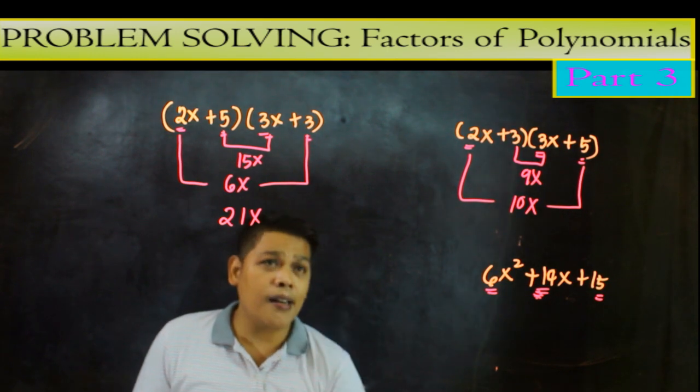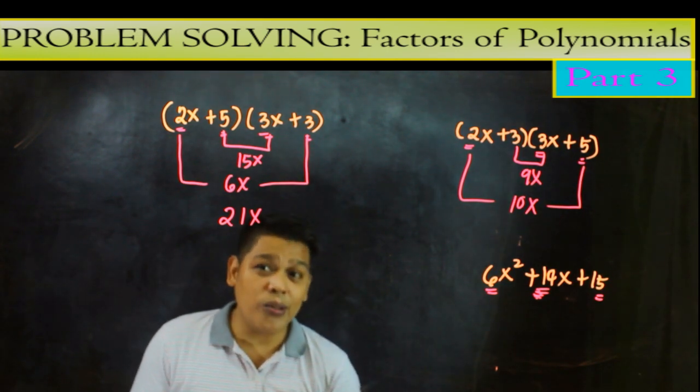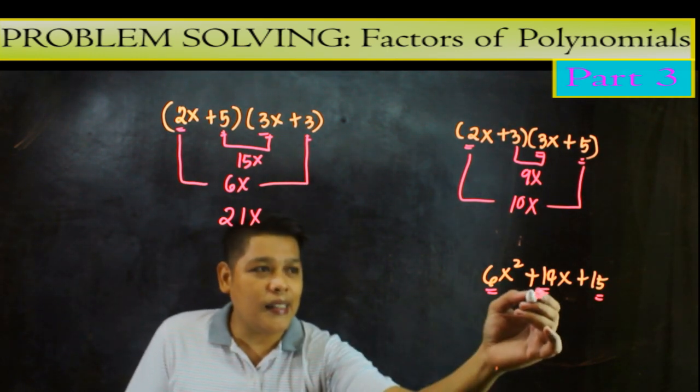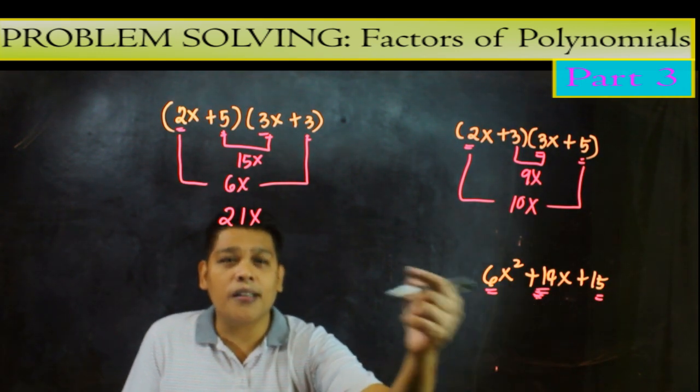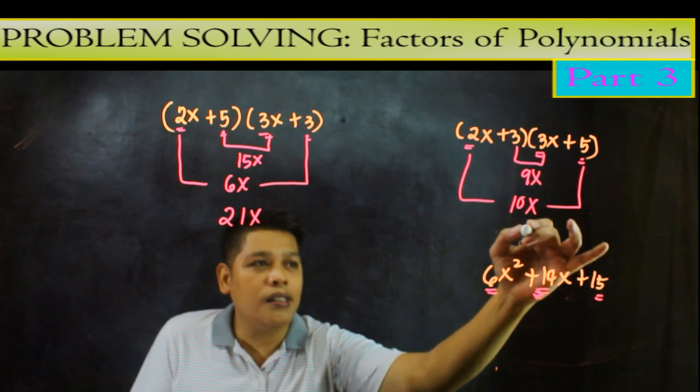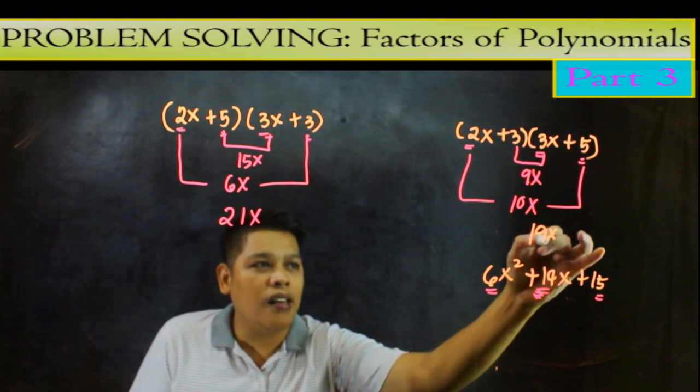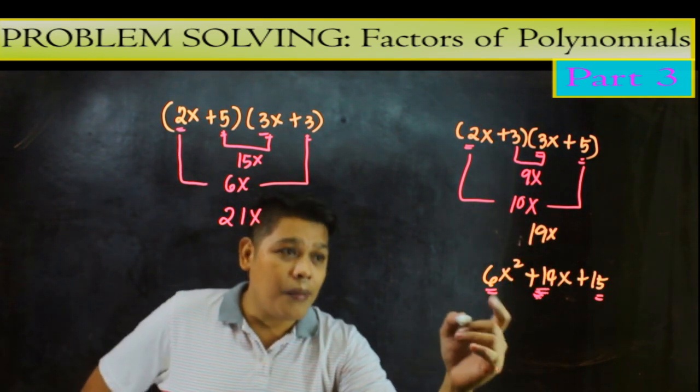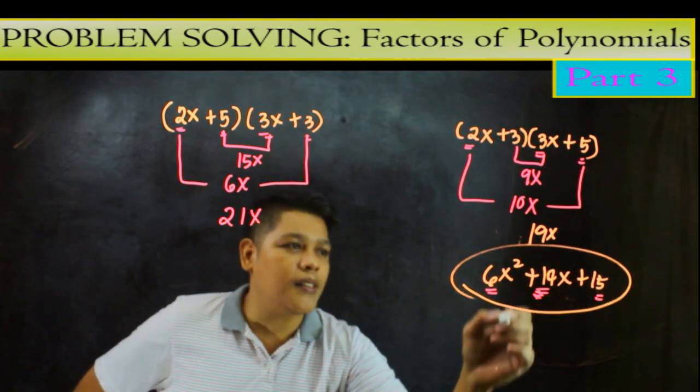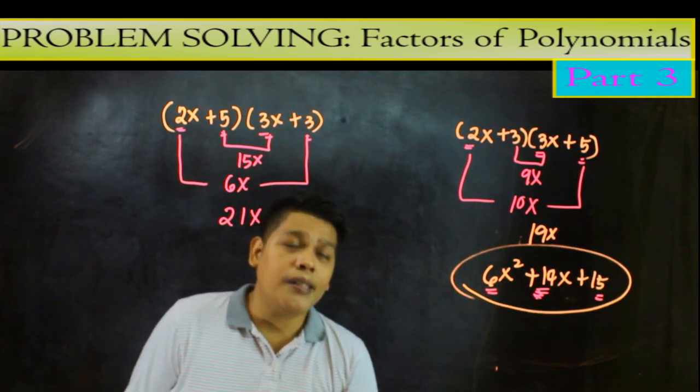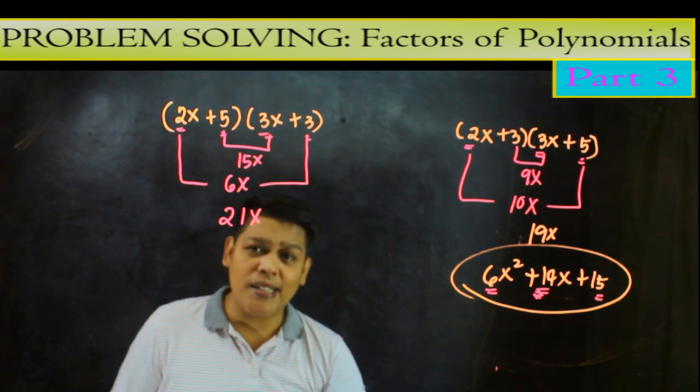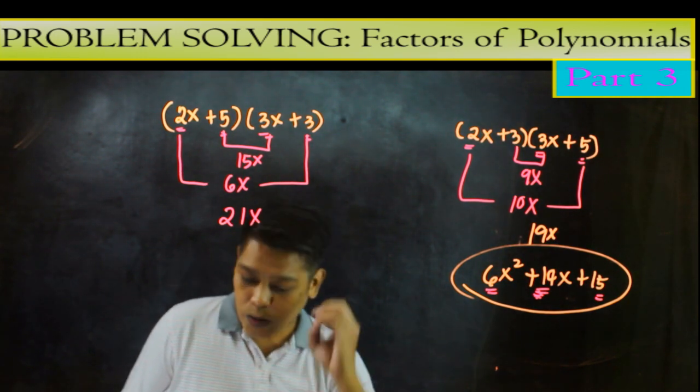So binigay na yan. Sa gibin natin. So alin dito? Sa dalawa ang makapagbigay ng 19x. So 6x squared plus 19x plus 15. So pag minigplus natin ito, this is 19x. So ibig sabihin, ang factor ng 6x squared plus 19x plus 15 is 2x plus 3 times 3x plus 5. So may kinalamin yan sa ating next na question.